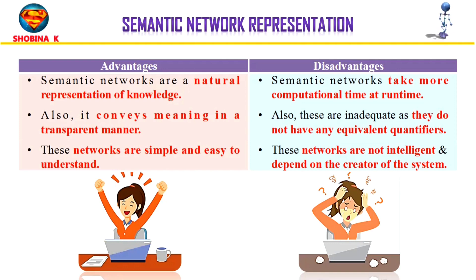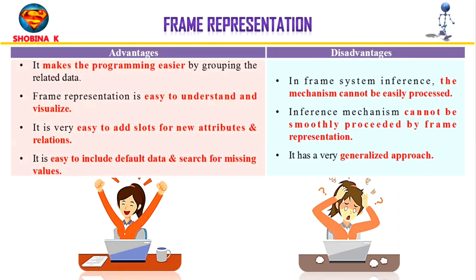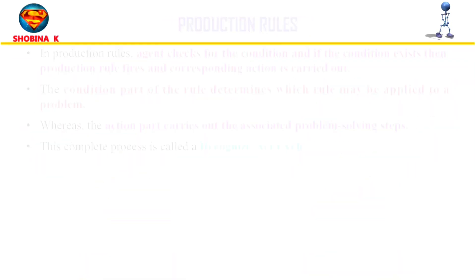Frame representation uses a record-like structure consisting of a collection of attributes and values to describe an entity in the world. These are AI data structures that divide knowledge into substructures by representing stereotype situations. Frames consist of slots and slot values of any type and size, and slots have names and values called facets. Advantages include easier programming by grouping related data, easy visualization, and easy addition of slots for new attributes. Disadvantages include difficulty in smoothly processing the inference mechanism and a very generalized approach.